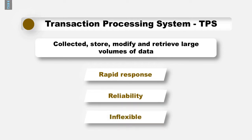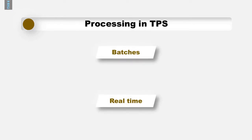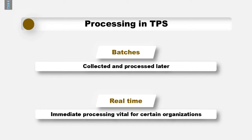A TPS system also has inflexibility — it will follow a standard process route and is not able to adapt or have any flexible response to any input it receives. Finally, processing: a TPS can process data in batches or in real time. With batch processing, data is collected throughout a designated time period and processed at a later point in time, giving a time delay. However, real time processing is the immediate processing of data, which would be vital for organisations dealing with flight, train or hotel bookings, which need an immediate response.